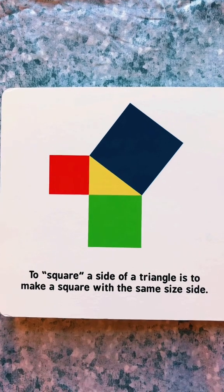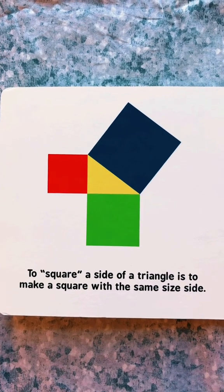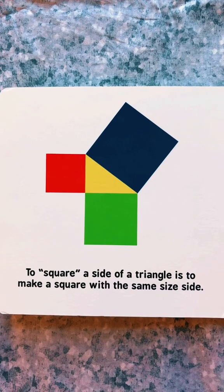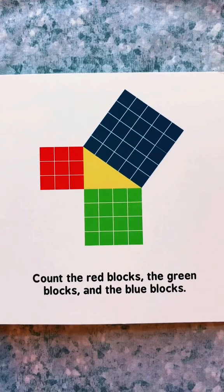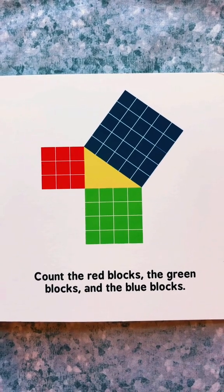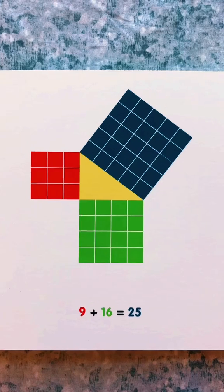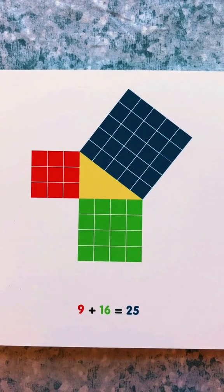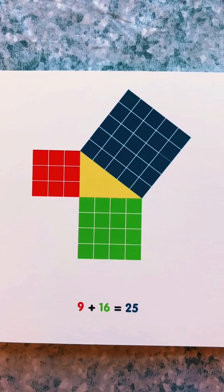To square a side of a triangle is to make a square with the same size side. Count the red blocks, the green blocks, and the blue blocks.